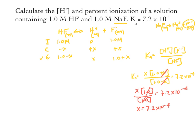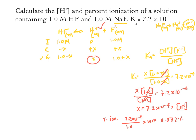We then check whether our approximation was acceptable, which also gives us our percent ionization. Our x corresponds to [H⁺]. Percent ionization equals (7.2 × 10⁻⁴ / 1.0) × 100, giving a very small percentage. We also check for F⁻, and it is absolutely fine since it's the same value. So we've calculated both our H⁺ concentration and our percent ionization from the common ion problem.